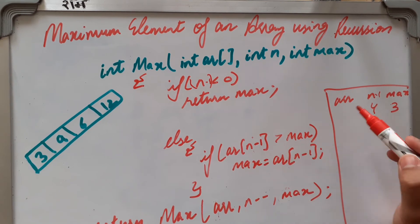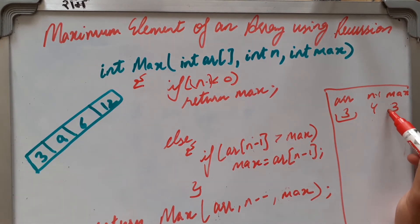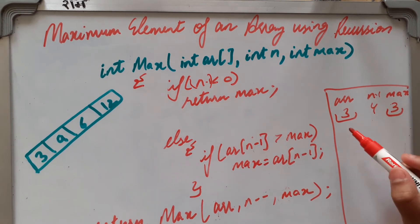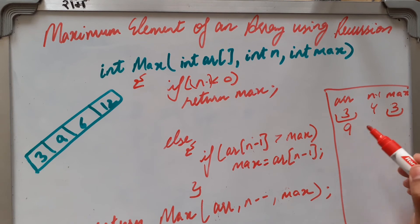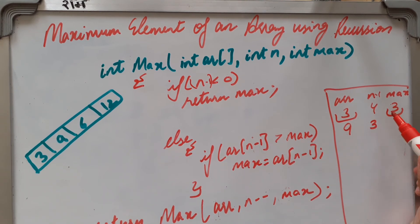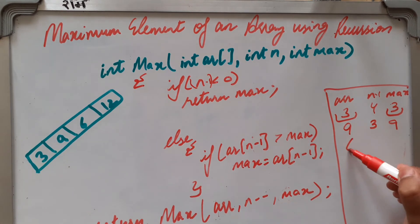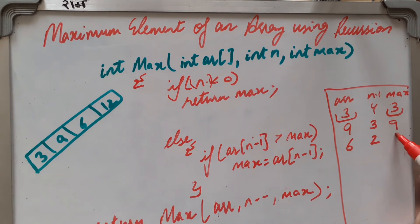It will compare 3 with 3, so max remains 3. Next, when our element is 9 and our array is 3, n minus 1 is 3 and your max becomes 9 here. And we are having again 6 and this is 2, and again 9 here. When we are having 12 and it is like 1.